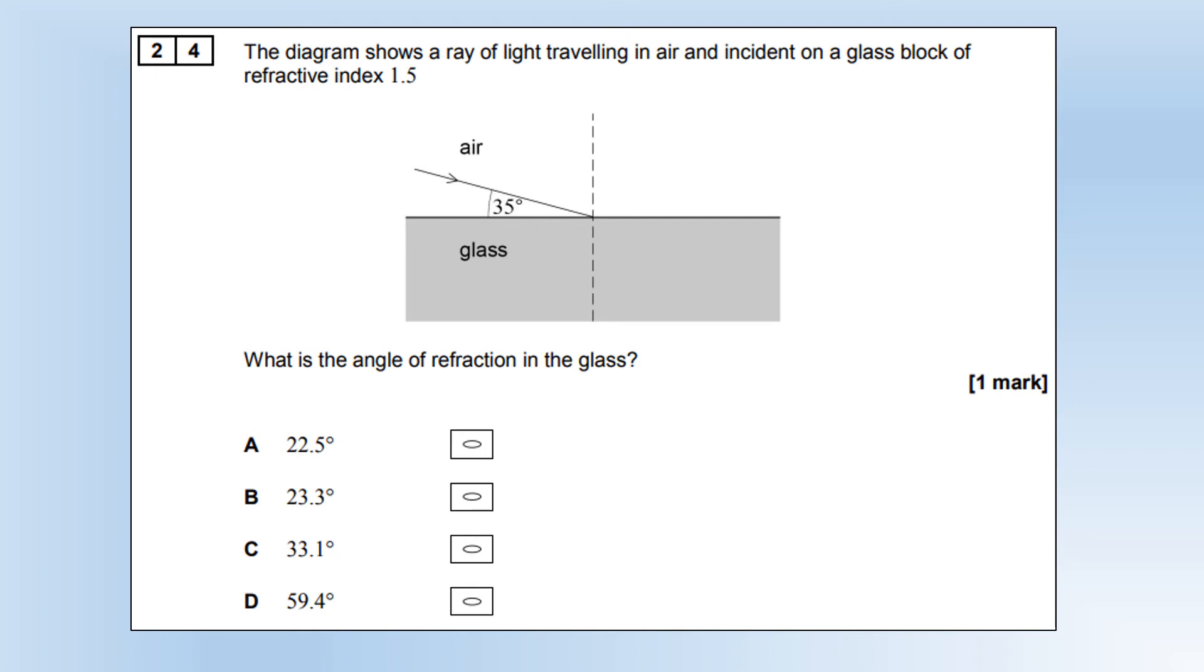The diagram shows a ray of light travelling in air and incident on a glass block, refractive index 1.5. What is the angle of refraction in the glass? We first need to find the angle of incidence by doing 90 minus 35. It's starting in air, so the optical index there is 1. We know it's getting into 1.5. Rearrange, plug in the numbers, gives us option C.